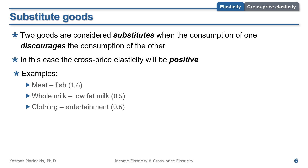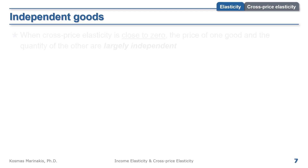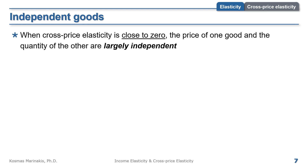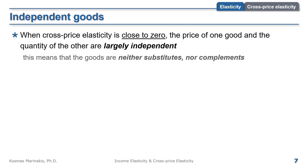The cross-price elasticity of rice and bread is 0.15, a bit smaller than expected. This was measured in Australia, where rice is not a staple of the local diet but is mostly served as garnish with protein-based foods, which perhaps explains why the degree of substitution is not very strong. When cross-price elasticity is close to zero, the price of one good and the quantity of the other are largely independent — the goods are neither substitutes nor complements.